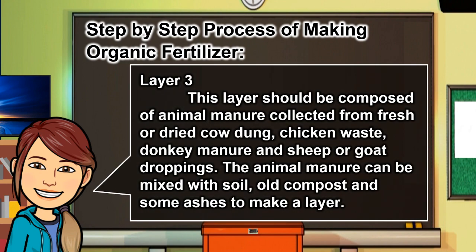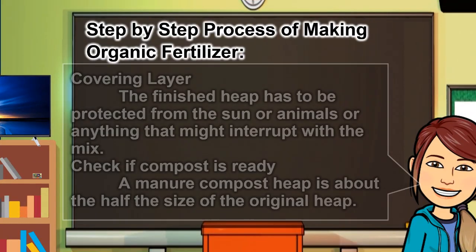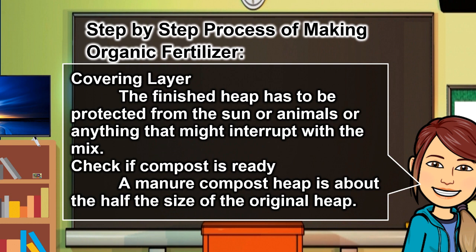Layer three: this layer should be composed of animal manure collected from fresh or dried cow dung, chicken waste, donkey manure, and sheep or goat droppings. The animal manure can be mixed with soil, old compost, and some ashes to make a layer. The covering layer: the finished heap must be protected from sun, animals, or anything that might interrupt the mix. A manure compost heap is ready when it is about half the size of the original heap.